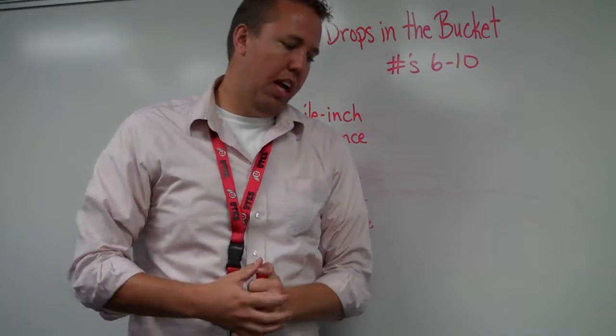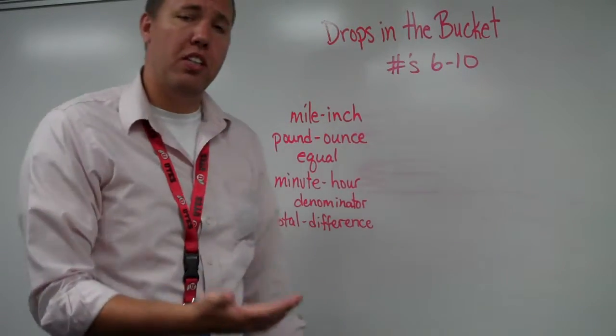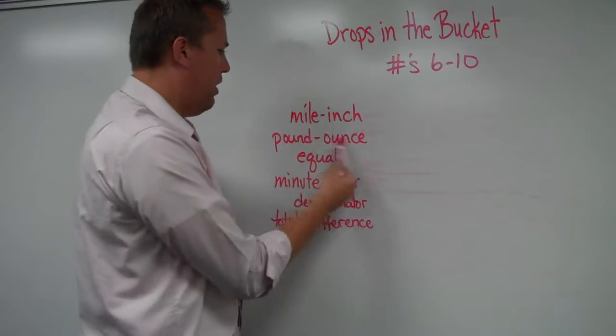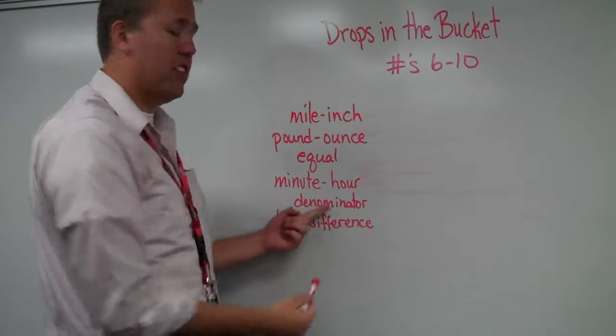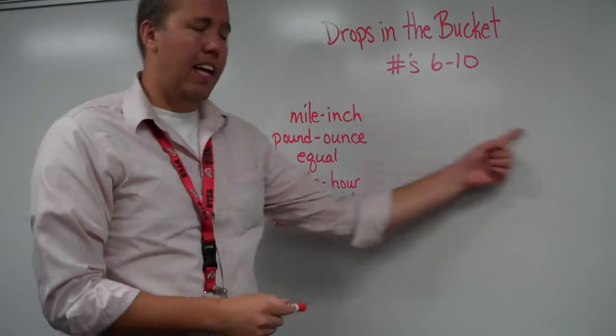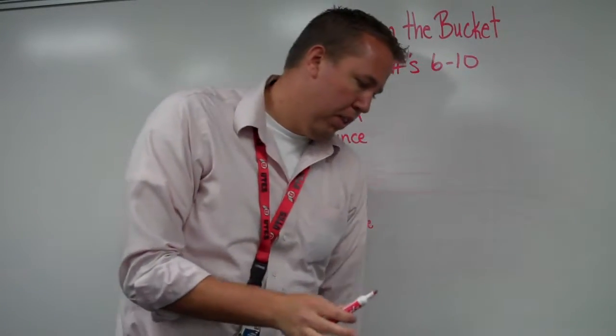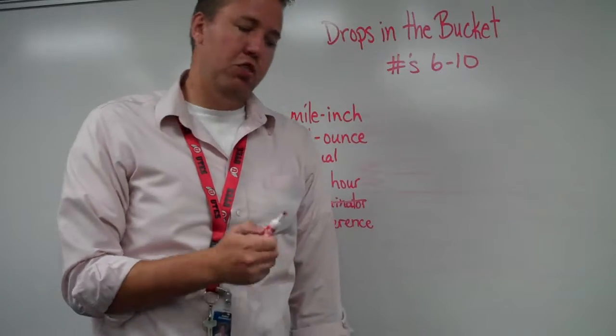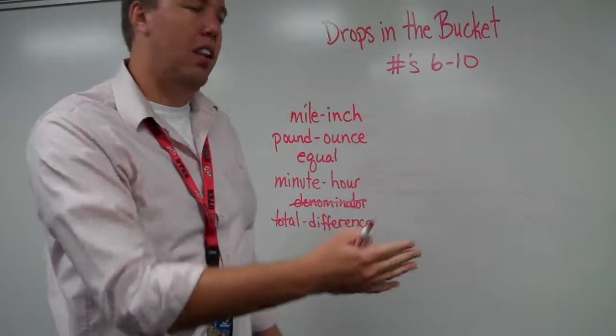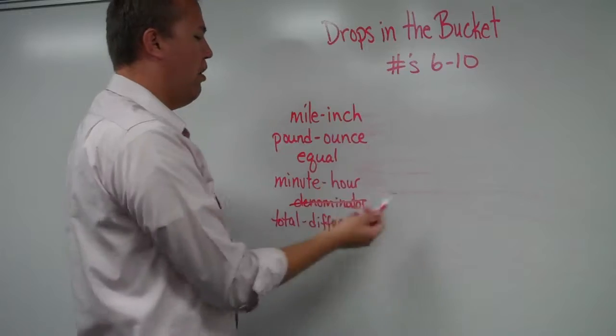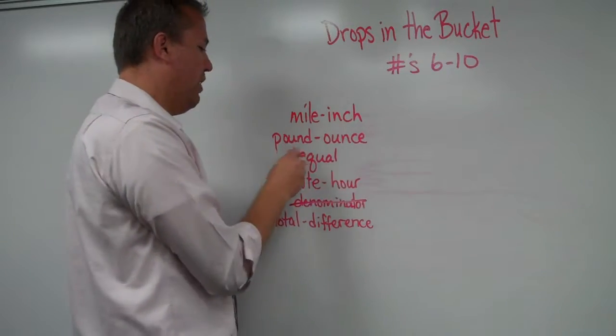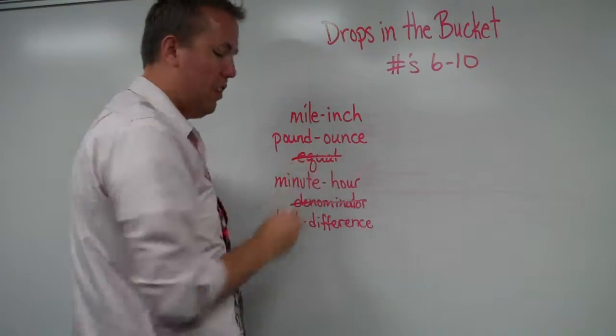So for instance, on this one, A says the bottom number of a fraction is called the mile or inch, pound or ounce, equal minute-hour denominator. It's called the denominator. So I would write that over here, and then I'm done with that. I will not use that again. B, the four sides of a square must be blank length. Must be equal length. So I just write that over here and cross it out.